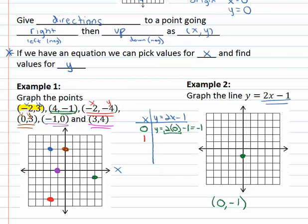Let's pick a positive value for x. One's always a good positive value, so y is equal to 2x or two times one minus one. Two times one is two, minus one is just positive one. So that tells us when x is one, y is also one, so one over, one up.